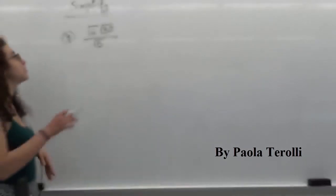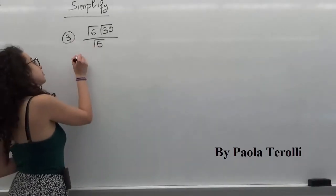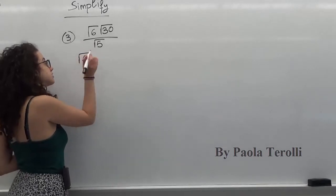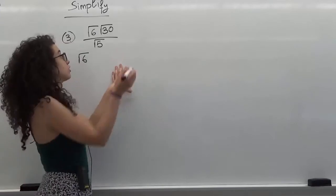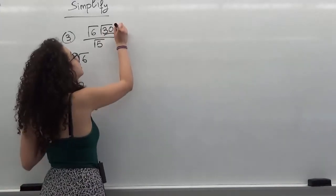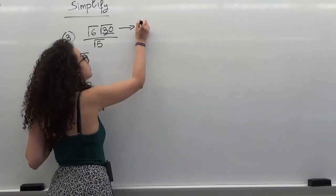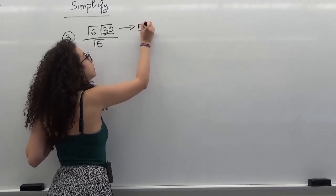We're going to keep the 6 as it is. We can keep radical of 6 as it is. Now we have radical of 30, but 30 itself can be divided into two factors. We can say that 30 is equal to 5 times 6.